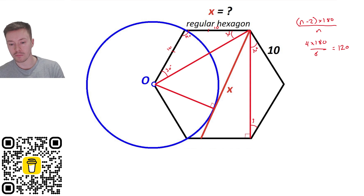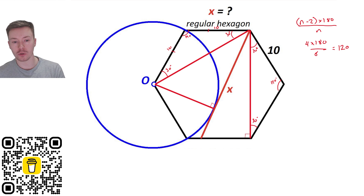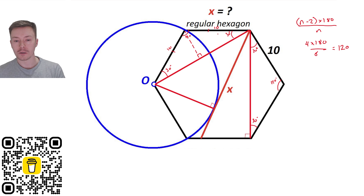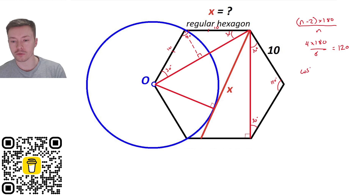That 30-degree angle applies to the right-hand triangle as well. Now we can use that information — dropping a perpendicular to work out half of the top-left introduced line using trigonometry. We have 30 degrees, and we're working with adjacent and hypotenuse, so we use cosine. Cos 30 equals adjacent over hypotenuse, which is 10.